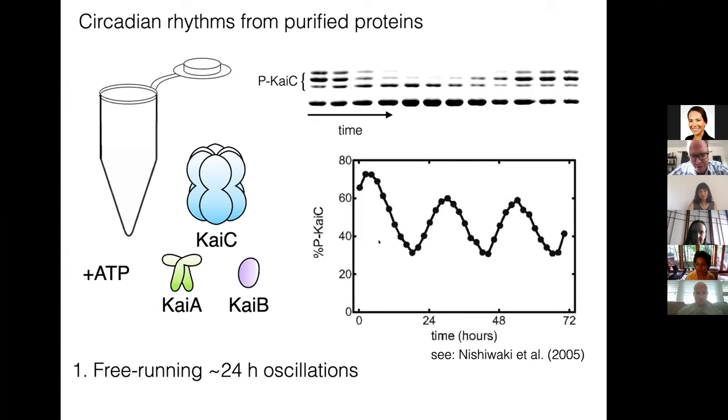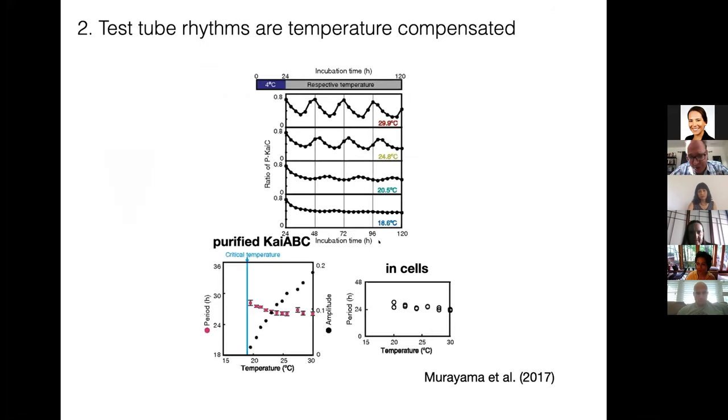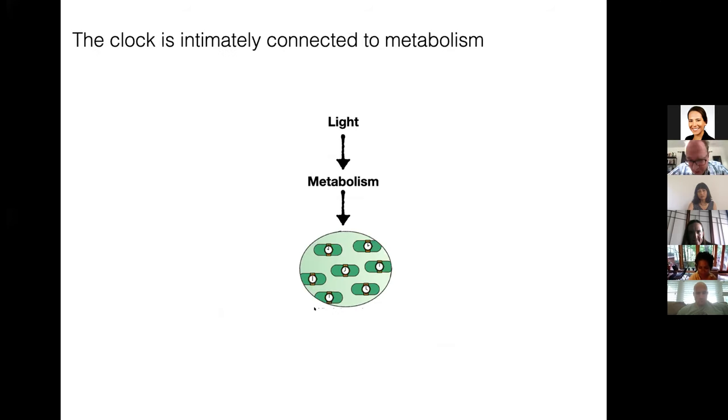So I mentioned there were these three conditions for something to be a real circadian rhythm. One is it's supposed to be free-running, which you can see this protein mixture is. It can go on for at least a couple weeks on its own. The second was temperature compensation. Here's a really nice paper showing that. As you change the temperature, the amplitude of this protein oscillator changes, it decreases as the temperature falls, but the period is nearly unchanged.